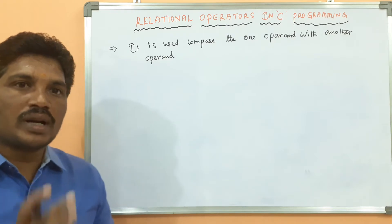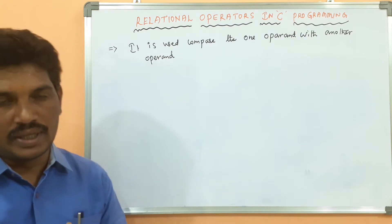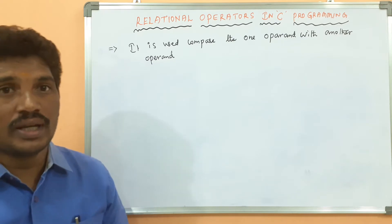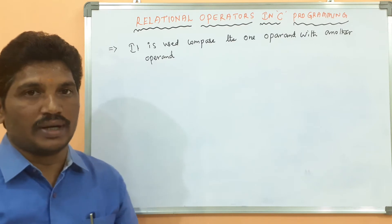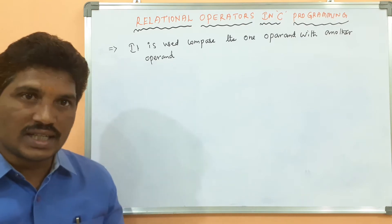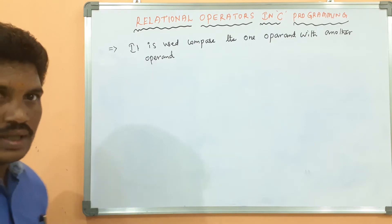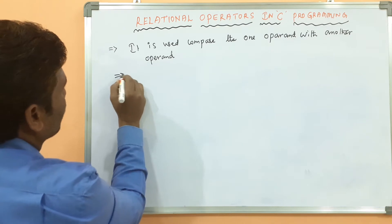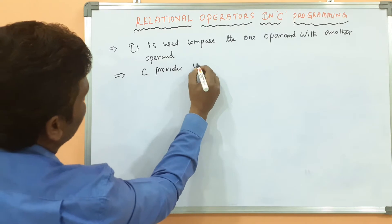For example, operand A should be compared with B. I have taken two variables A and B: A less than B, or A greater than B, or A greater than or equal to B — because one operand is comparing with another operand. If the condition is true it returns 1; if the condition is false it returns 0. C provides various relational operators.